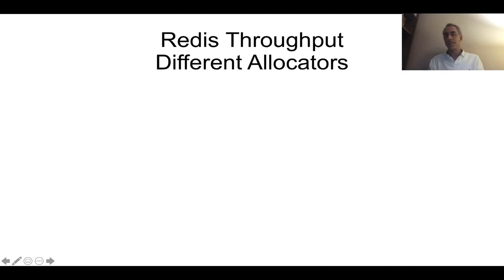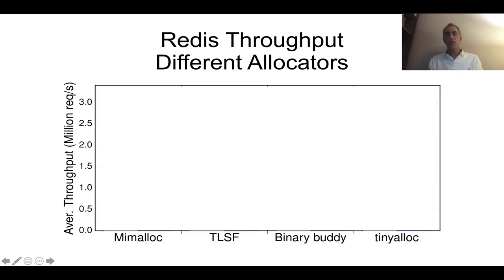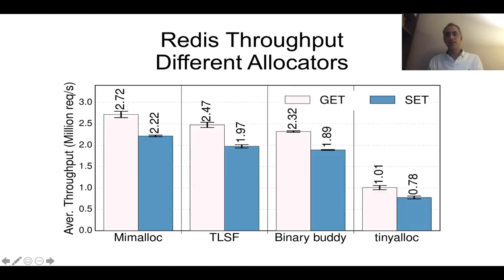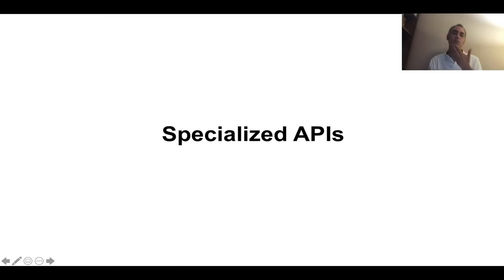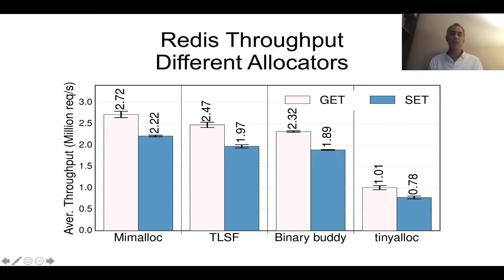Throughput is also affected by memory allocators. We did a test using four different memory allocators for Redis gets and sets, and you can see there's a significant variation between TinyAlloc, which is a simple memory allocator, and MiMalloc for Microsoft. So it really does matter which memory allocator you're using.